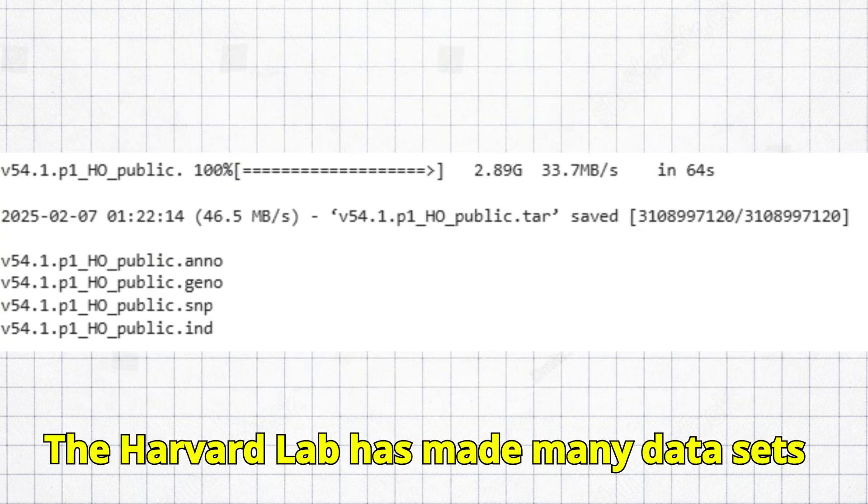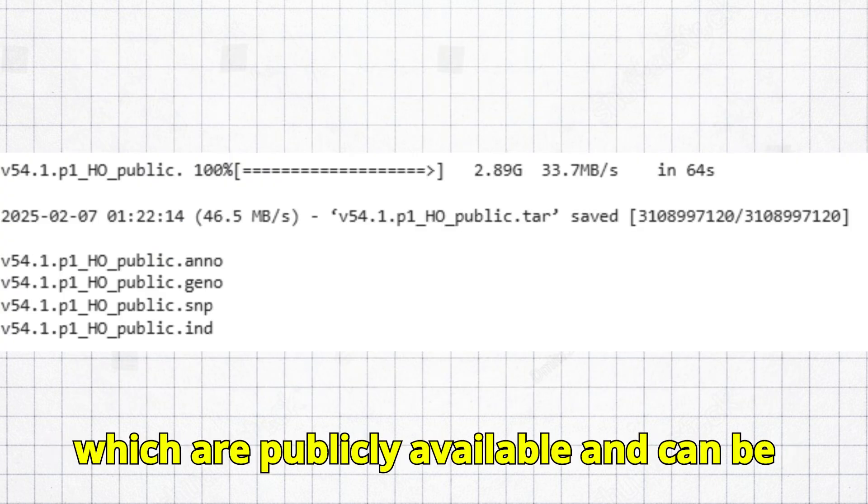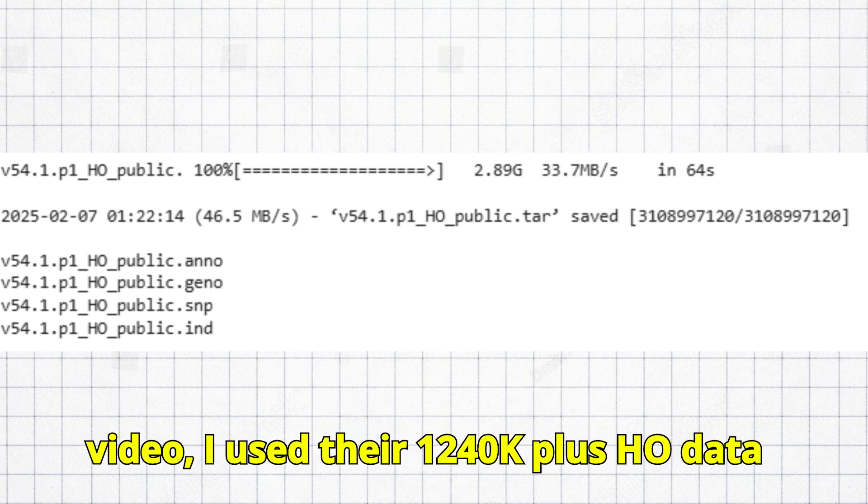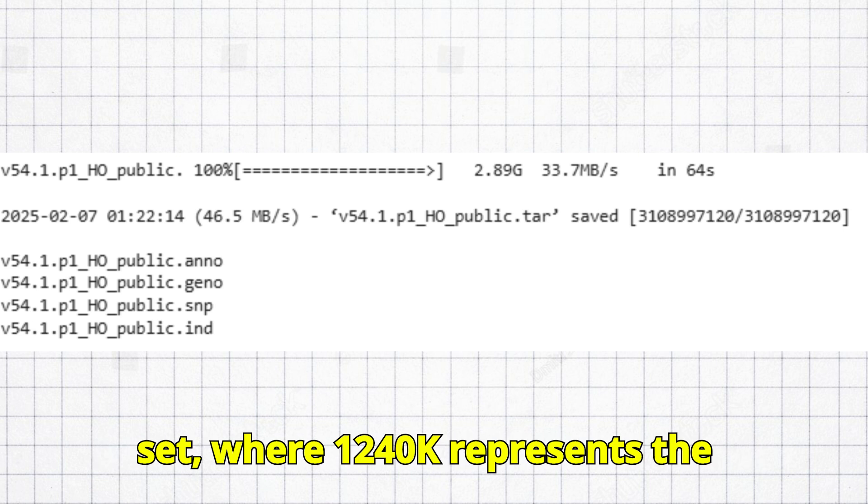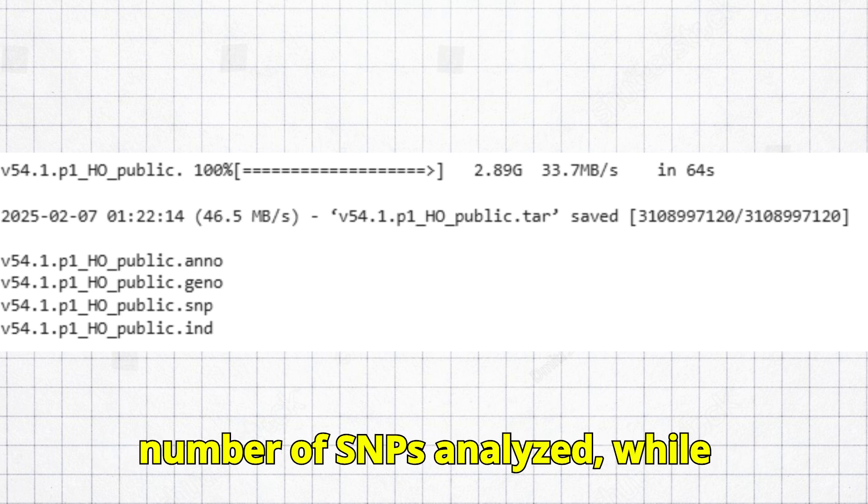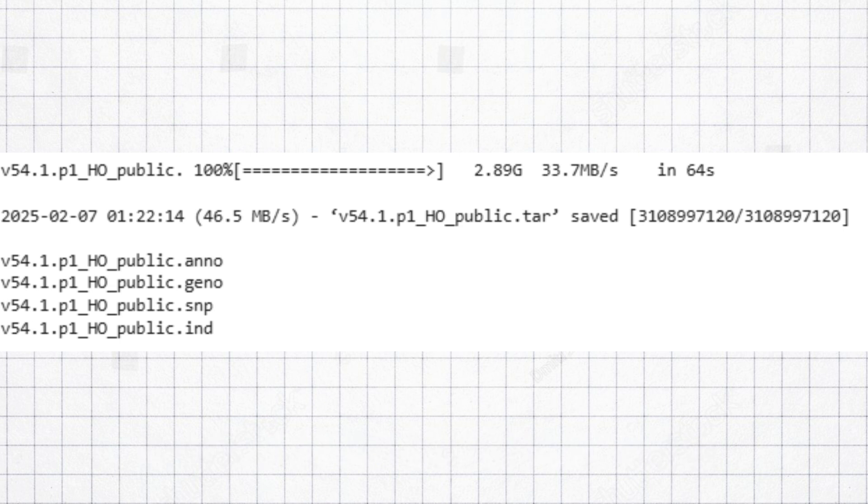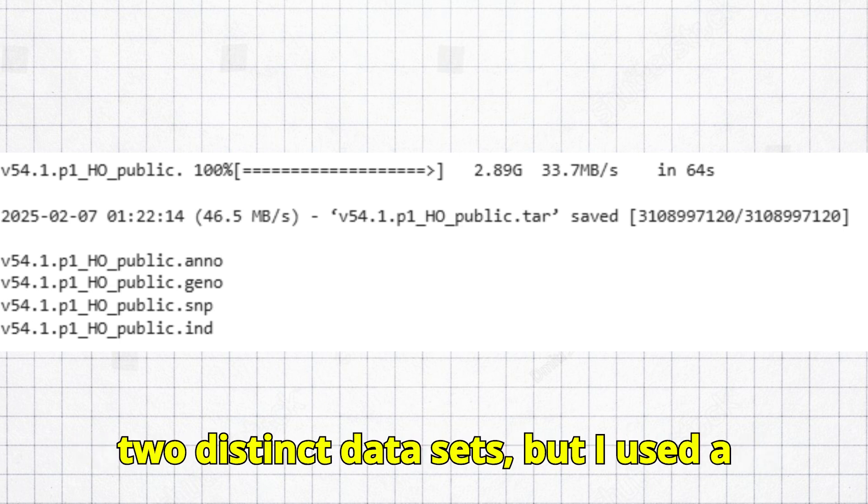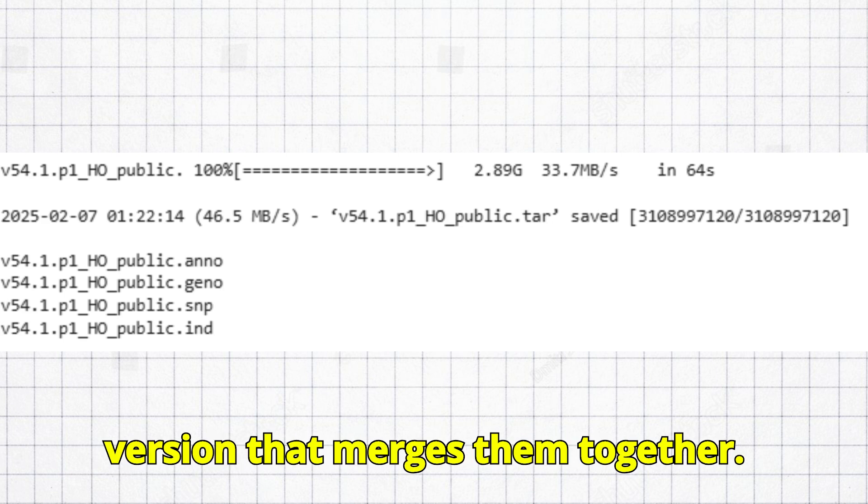The Harvard lab has made many datasets which are publicly available and can be analyzed with AdMixTools. For this video, I used their 1240k plus HO dataset, where 1240k represents the number of SNPs analyzed, while HO stands for human origins. These are two distinct datasets, but I used a version that merges them together.